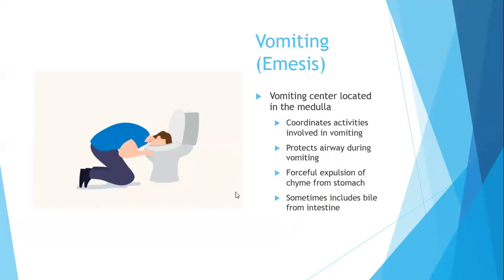Vomiting, or emesis, involves a vomiting center located in the medulla of the brainstem. It coordinates all the activities involved in vomiting. The vomiting center protects your airway during vomiting so you don't aspirate, because inhaling stomach acids could be dangerous. Vomiting itself is the forceful expulsion of contents from the stomach.